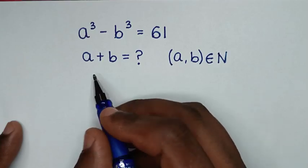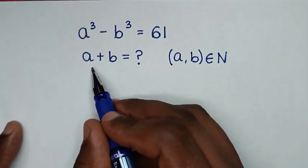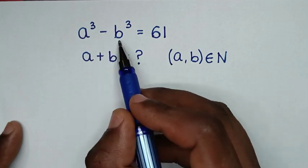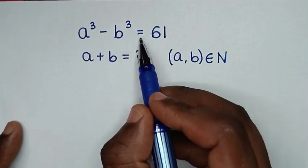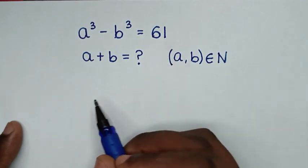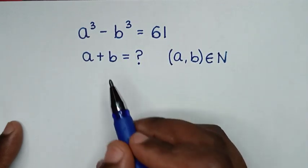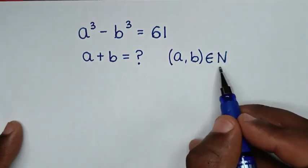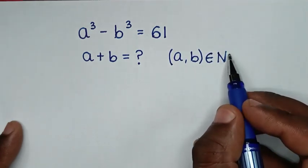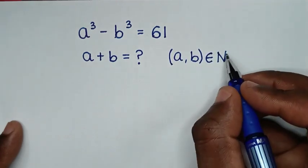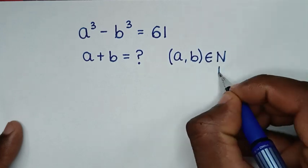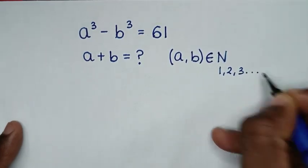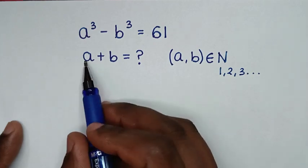Hello, you are welcome to solve this math problem: a³ minus b³ is equal to 61, to find the value of a plus b, given that a, b is an element of the natural numbers. Now we know that natural numbers are 1, 2, 3, and so on.